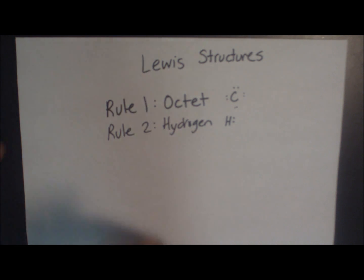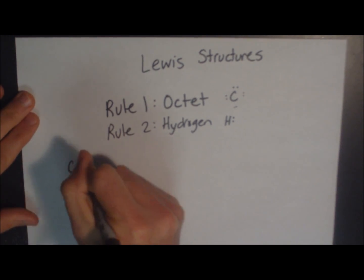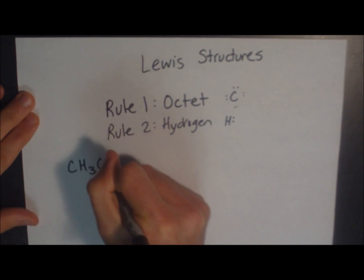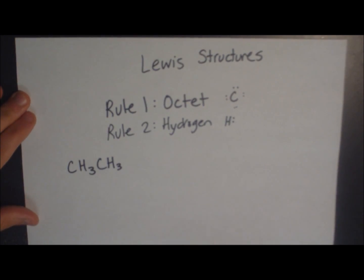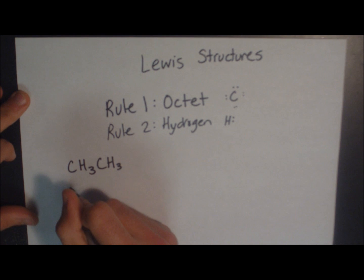So, for example, let's do the Lewis structure CH3CH3. Now, your first step in drawing the Lewis structure will be to do a little math. There are two carbons in this structure, and there are going to be six hydrogens.